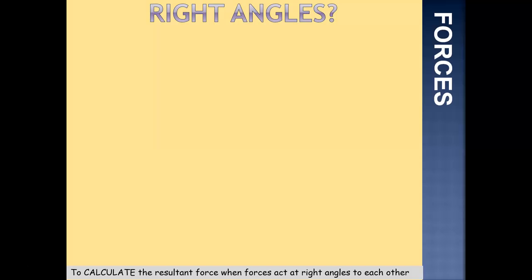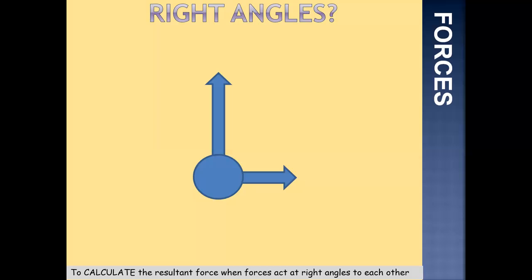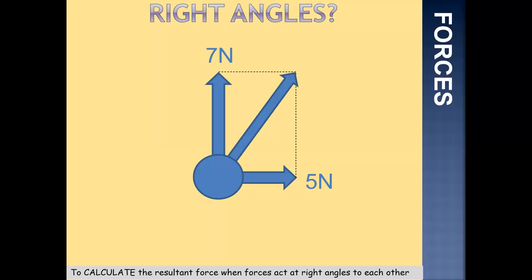What about if they're acting at right angles? We have an object with two forces acting upon it: one force is acting straight up and one force is acting to the right. We'd need our resultant force to be a single force that has the same effect on that object. The way we'd work that out is: we have 7 newtons acting up and 5 newtons to the right. The first step is to draw a little square — a dotted line going across from the top of the 7 newtons and going up from the 5 newtons. From there, we draw our arrow showing where the overall resultant force would be acting.